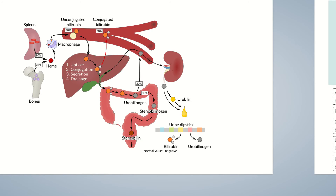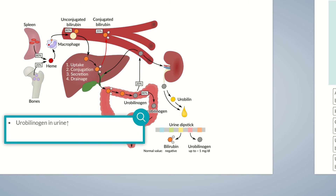In addition to bilirubin, urobilinogen can also be measured using the urine dipstick. Under normal conditions, small quantities of up to 1 mg per deciliter may be found in the urine. Higher values are pathological and termed urobilinogenuria. It's usually observed in hemolytic diseases, which lead to the breakdown of erythrocytes and an increase in unconjugated serum bilirubin levels. There is higher bilirubin excretion via the liver into the colon, resulting in more urobilinogen produced, which is eventually reabsorbed and excreted by the liver and in urine, resulting in elevated urobilinogen levels.